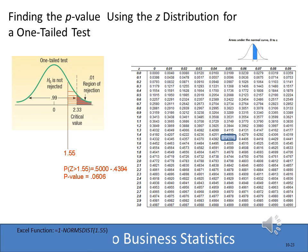The z value we computed was 1.55. We look up the probability in the z table — 1.55 gives us 0.4394. Since we're always working with just half the distribution, we take 0.5 minus 0.4394, and we end up with a p-value of 0.0606. That is the probability of getting that particular z score.